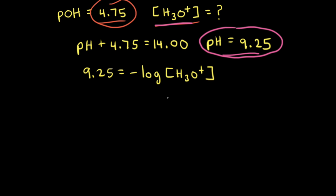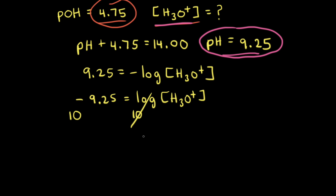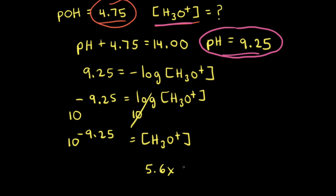Next we need to solve for the concentration of hydronium ions. We move the negative sign over to the left side, which gives us negative 9.25 is equal to the log of the concentration of hydronium ions. To get rid of that log, we take 10 to both sides. So the concentration of hydronium ions, H3O+, is equal to 10 to the negative 9.25, which equals 5.6 times 10 to the negative 10 molar.